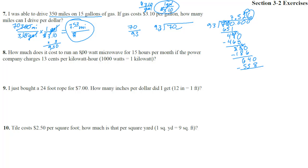Number 8. How much does it cost to run 800 watts? So here's 800 watts, 15 hours. We're timesing by 15 hours. It's not 800 watts divided by 15 hours. It's 800 watts times 15 hours per month. The company charges 13 cents per kilowatt hour. So 0.13 dollars per kilowatt hour. Notice we're trying to get cost. How much does it cost per month? We want to get dollars per month.